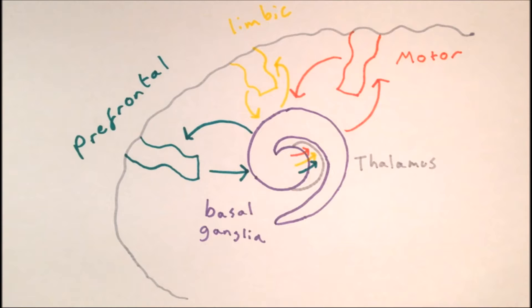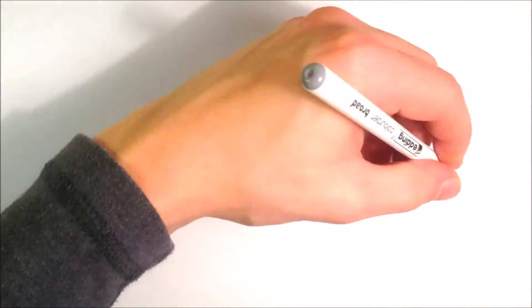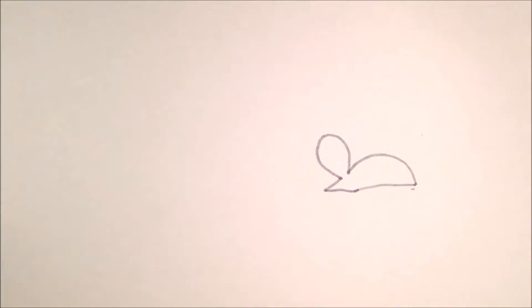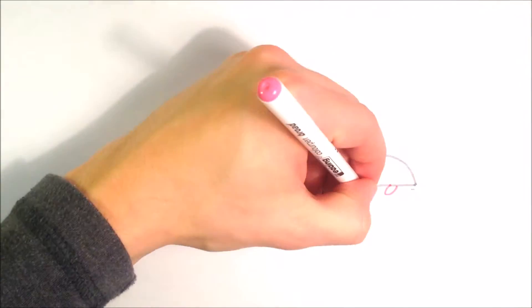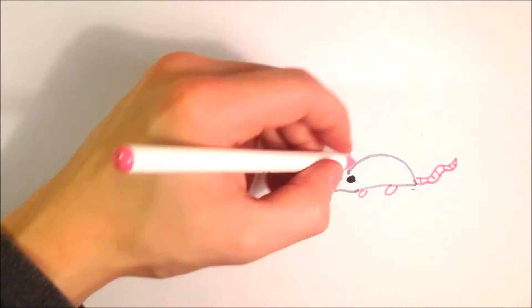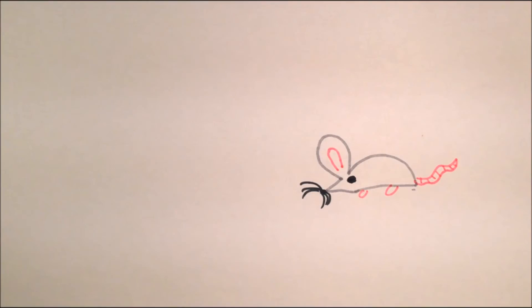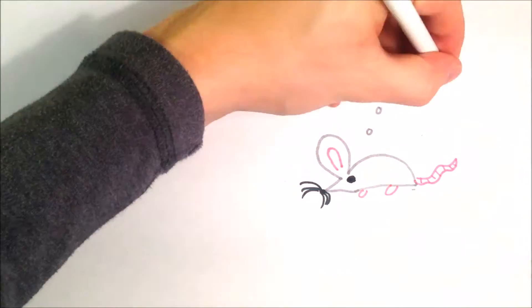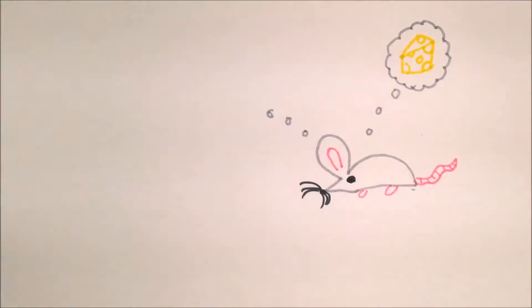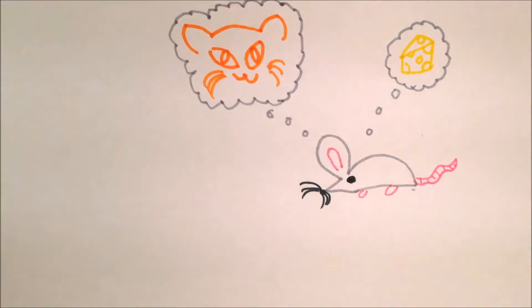The purpose of all these loops flowing through the basal ganglia is thought to be so that the basal ganglia can perform something called action selection. The brain is composed of many different subsystems all operating in parallel. Many of these systems are all competing to gain control of the body at the same time — for example, circuits which control feeding behavior, circuits which control fear.